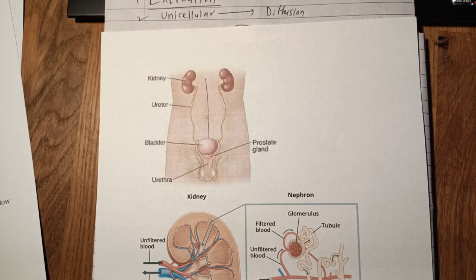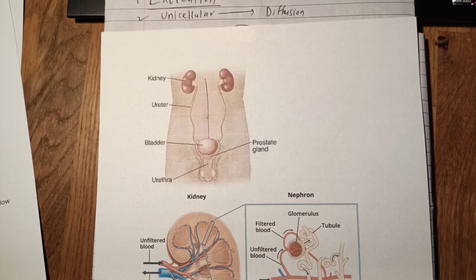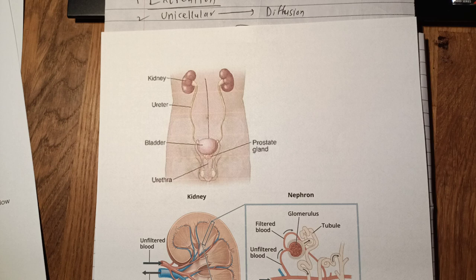These are the basic anatomical structures of the human excretory system. What does this human urinary system excrete? It excretes urea and uric acid — these are the nitrogenous waste products. It also excretes excess water, excess salts, as well as glucose, and various other toxins are excreted by the kidney.